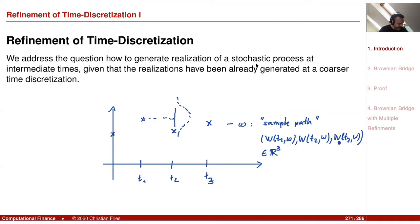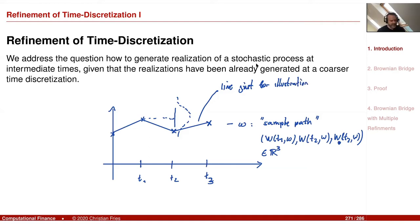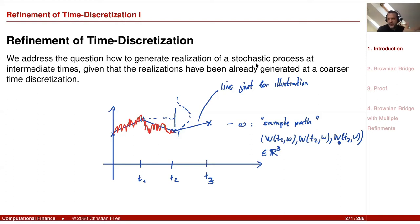If I draw a straight line from here to there, then this line is just for illustration, because this line is not the Brownian motion. The Brownian motion would look like this — it gets to this point and then to that point. We have generated points of the Brownian motion, and in between we know it's still a Brownian motion.